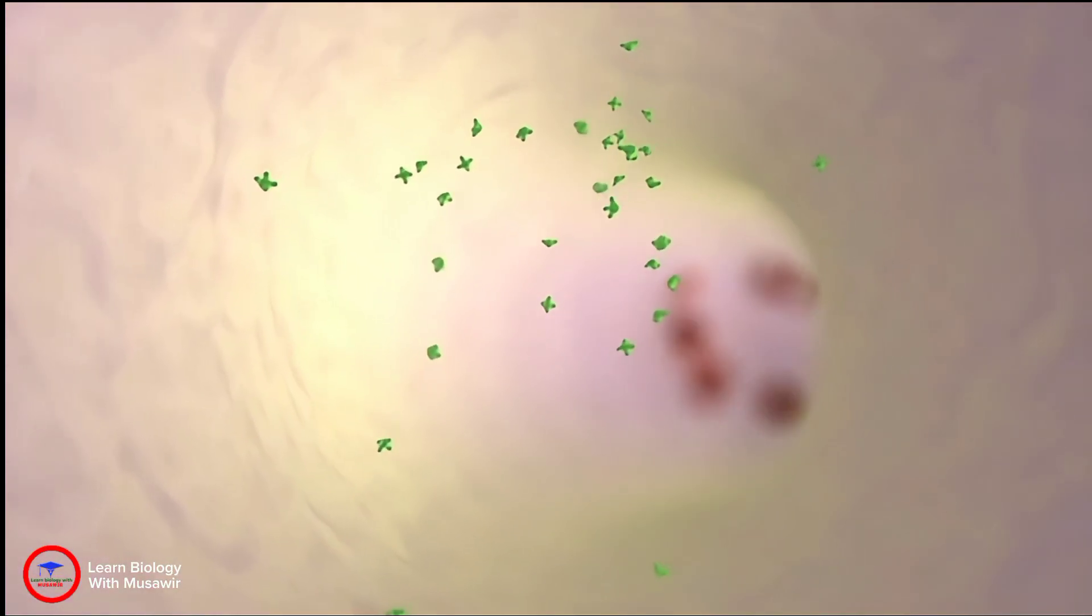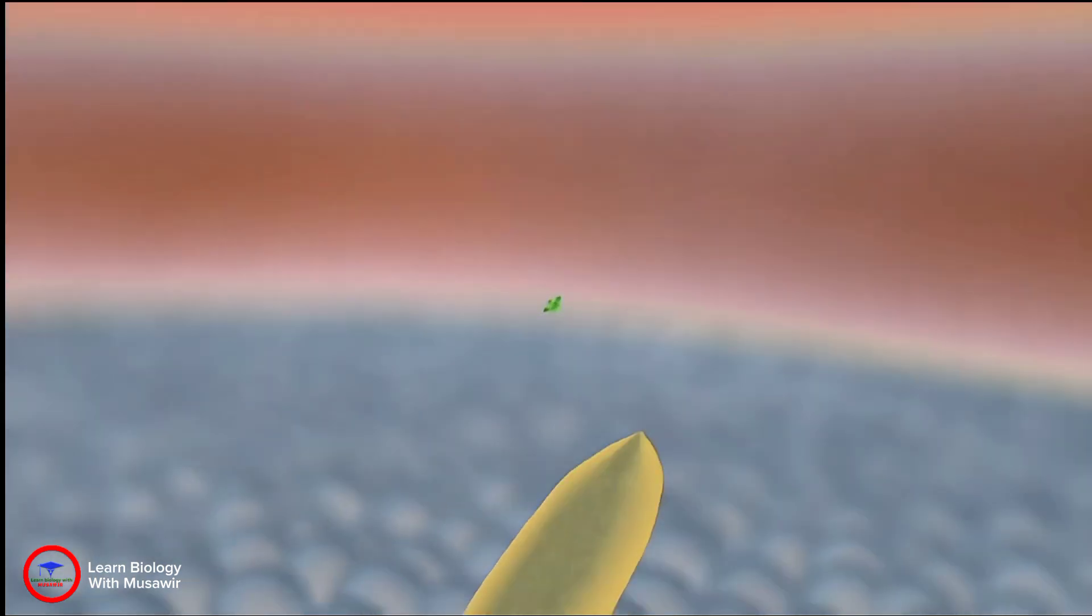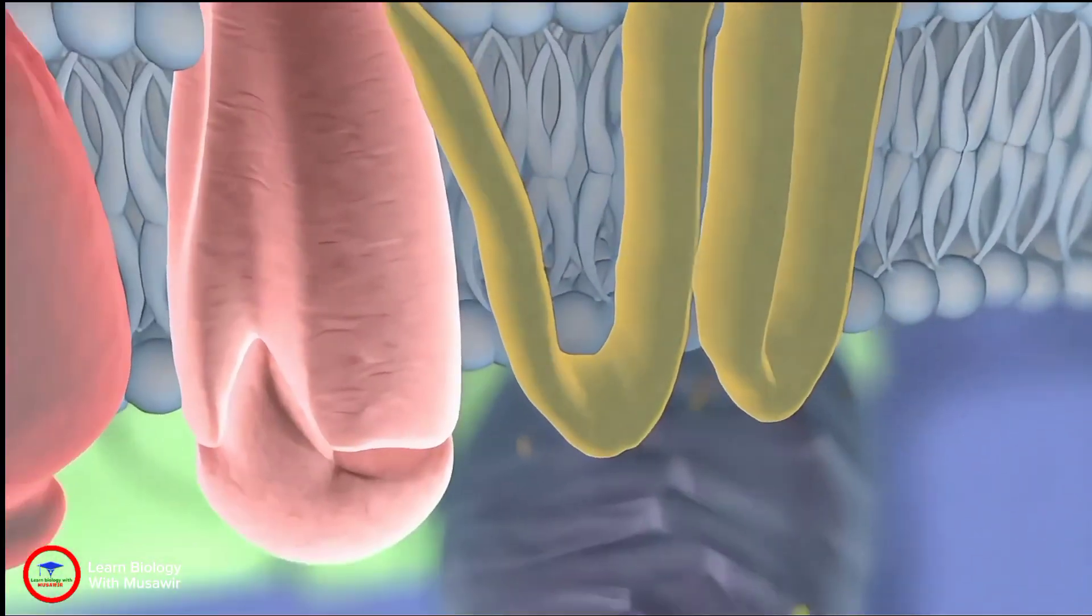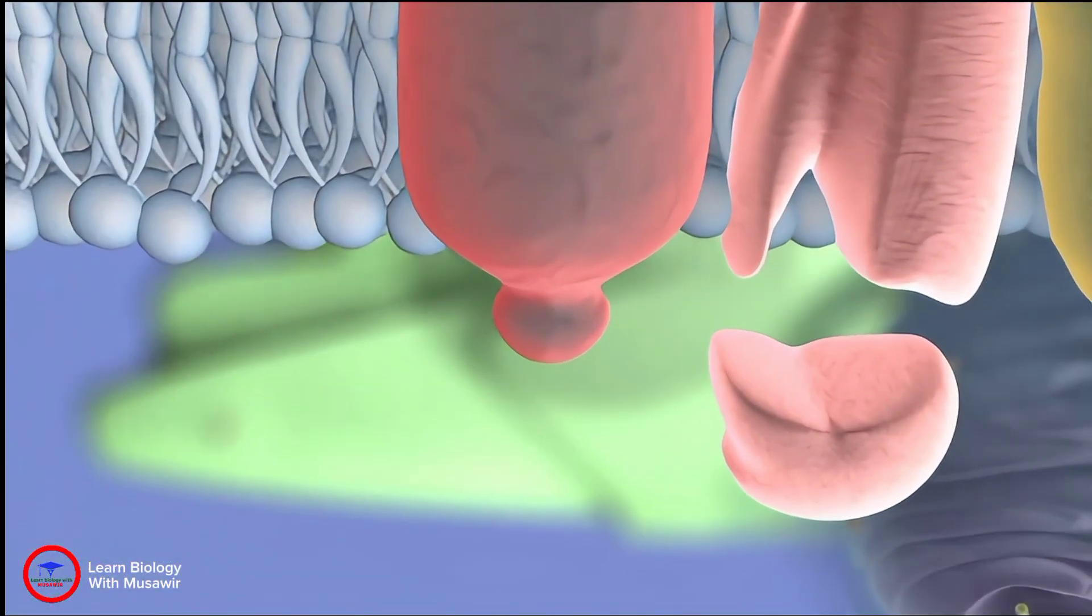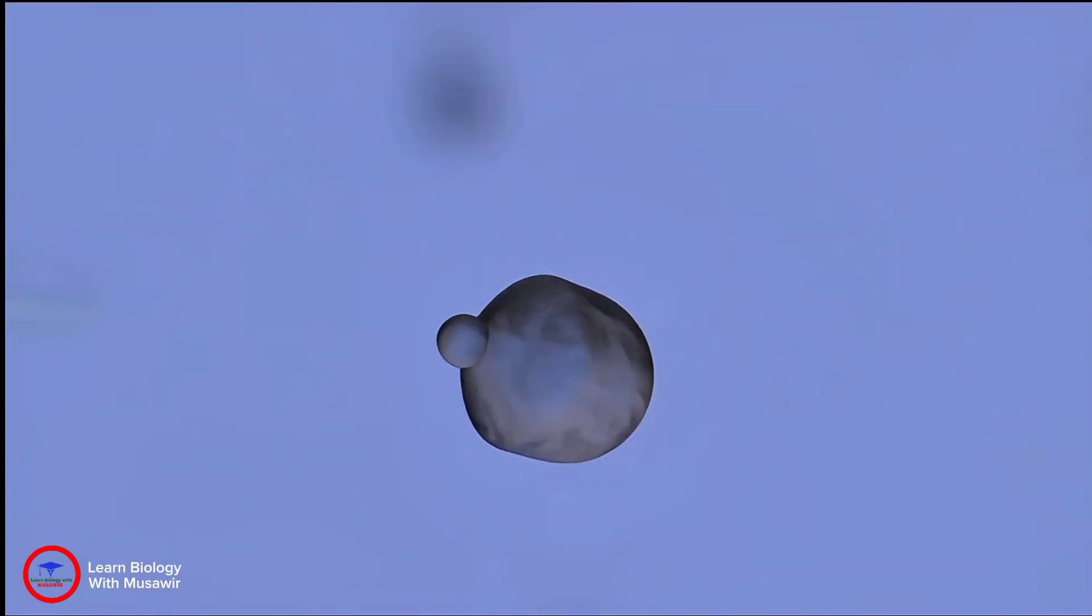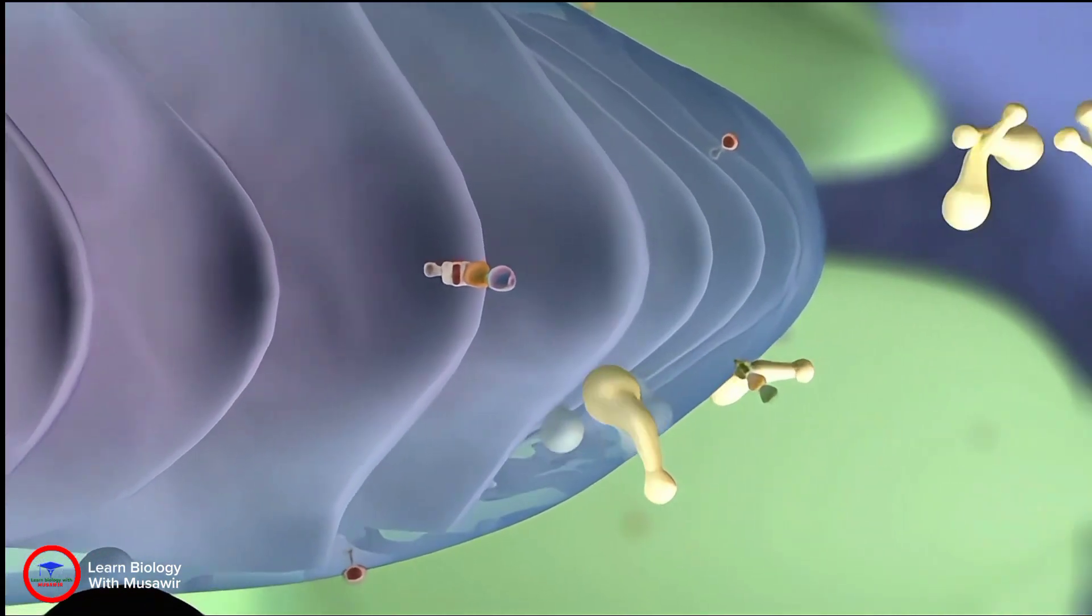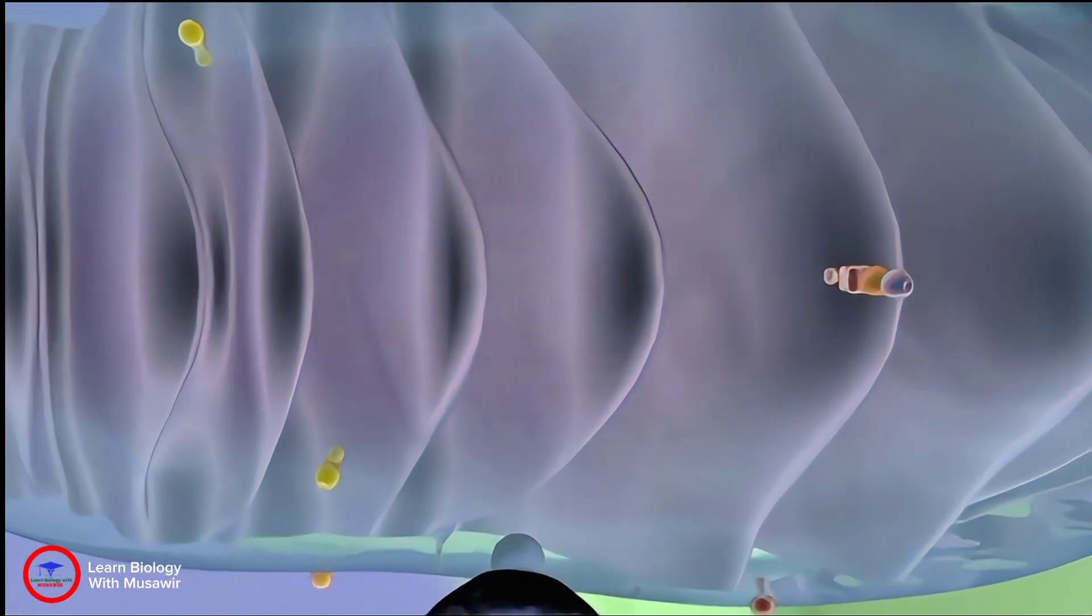Once a signaling molecule from the bloodstream reaches a cell and docks, the signal is passed into the cell. Like a miniature mousetrap game, the cell is filled with complex contraptions called proteins that bump and nudge each other to keep the signal going until it reaches its target.